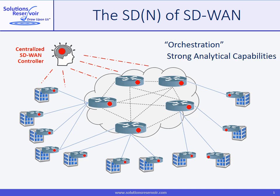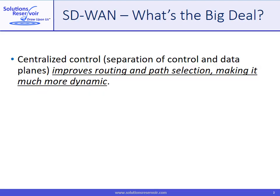Note that SD-WAN management packages tend to offer strong analytical capabilities for deep data sets. Because of centralized availability, visibility, and control, SD-WAN delivers more dynamic routing and path selection, which aligns with the more diverse and dynamic connectivity needs associated with cloud-based services.